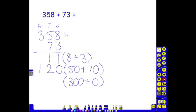50 add 70 is 120. Again, lining them up next to our brackets and lining them under our hundreds and our tens. Finally, we have 300 add nothing is 300.